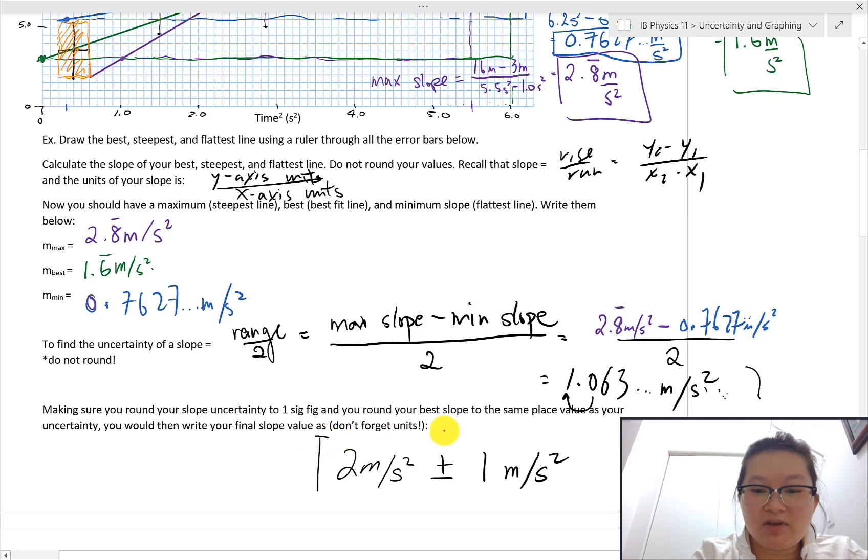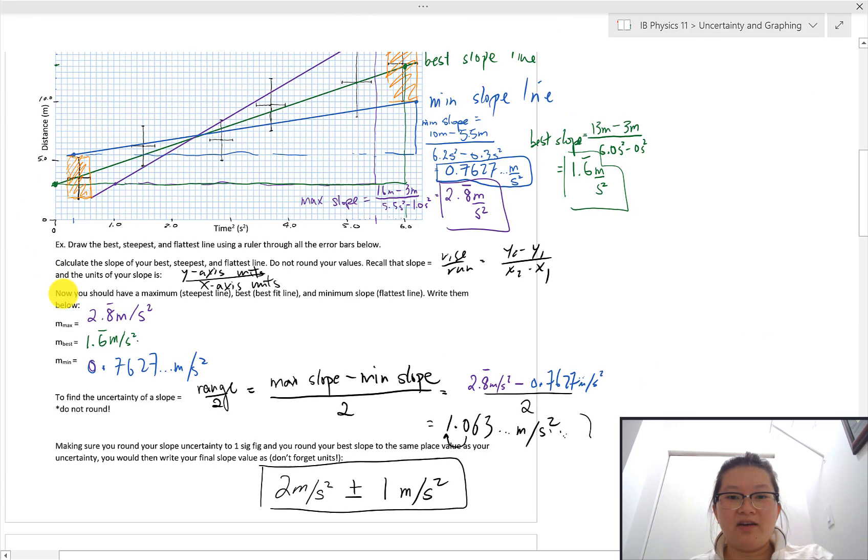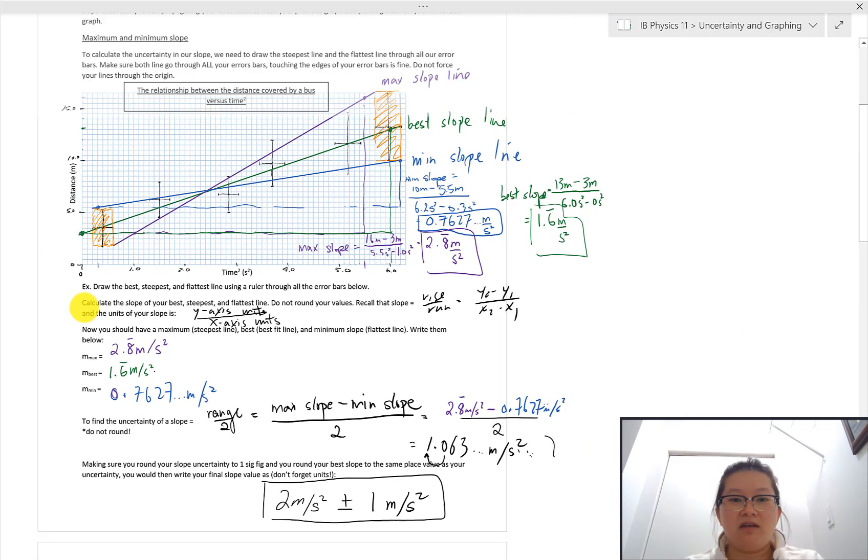Well, nothing you can do if your data is going to be all over your place, right? So here we have it. This is how you do slope uncertainty.